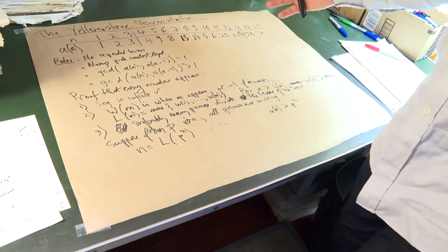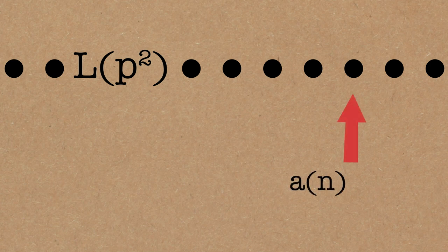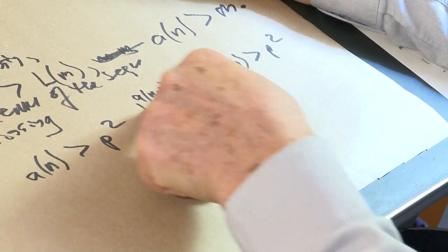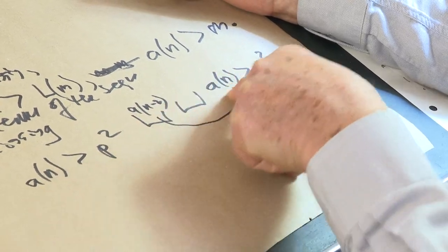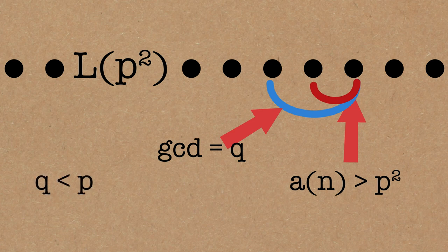So go out beyond the last prime less than p squared, and look at what we have. So we get a term, a of n, and we know it's bigger than p squared. We don't know what the number before it is, or the number two back. But we know there was a term before it that had a common factor with it. That's by the definition of the sequence. And so the linking term, the GCD, is a prime less than p. Because from now on, there are no other primes. So the GCD here is equal to q. And we know q is less than p, because all the terms in the sequence then on are products of primes less than p.